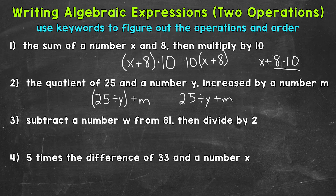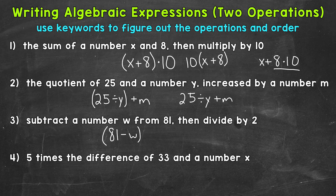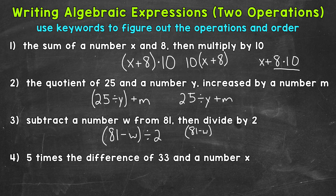Number 3: subtract a number w from 81, then divide by 2. We need to subtract w from 81 first, so that's 81 minus w — we are taking w from 81, so we switch that order. Put it within parentheses to show it's what we do first, then divide by 2. Another way to write this: 81 minus w in parentheses over 2, written as a fraction, which also represents division.